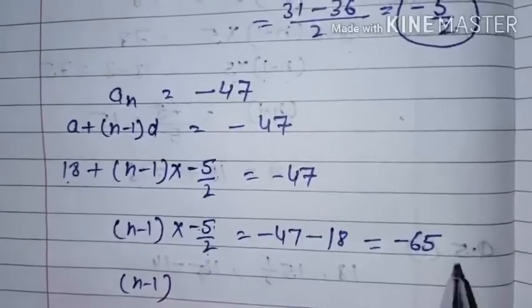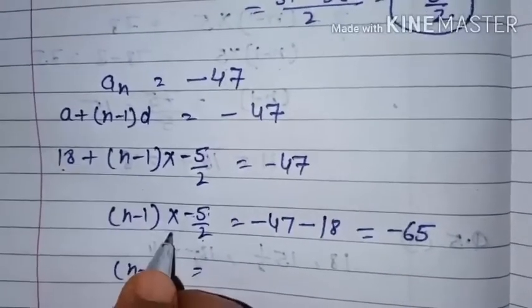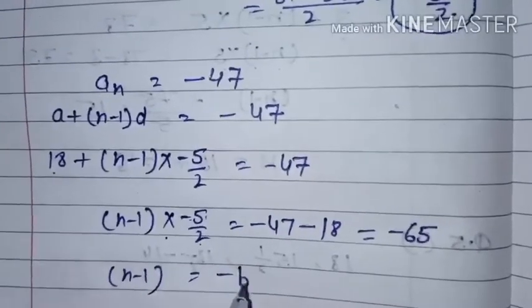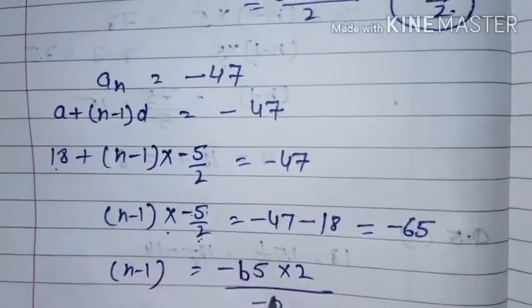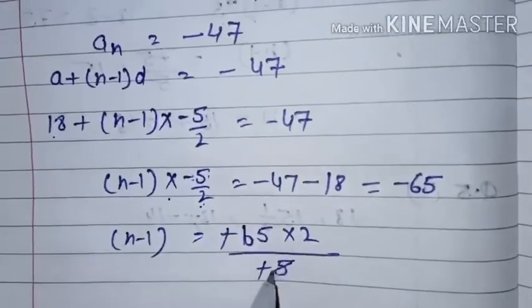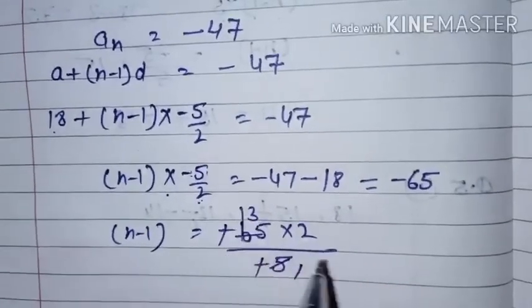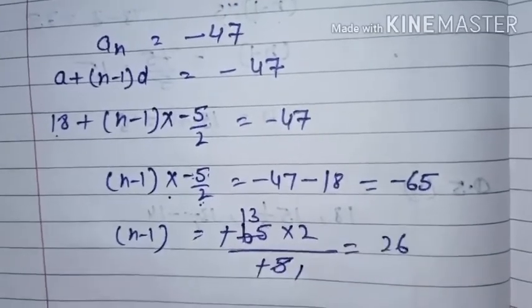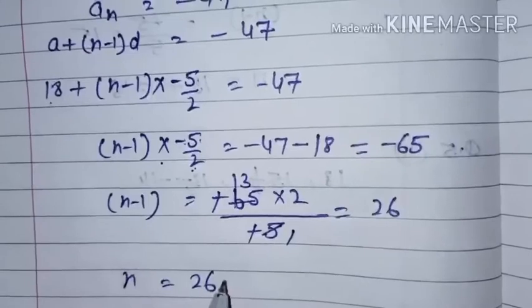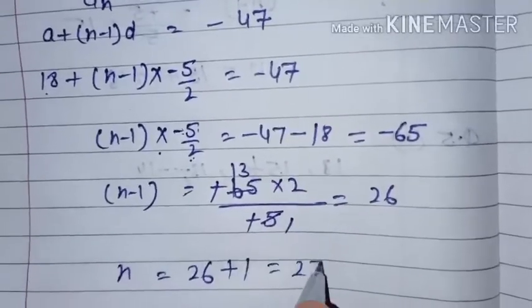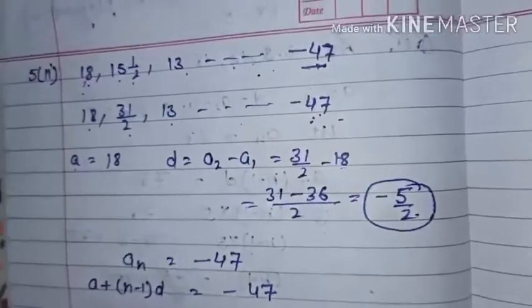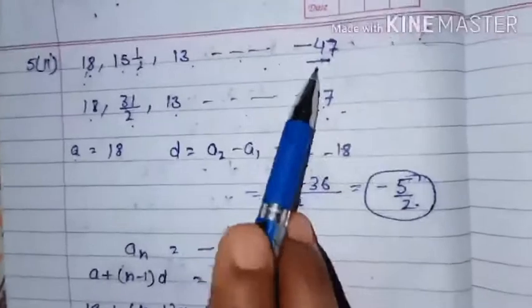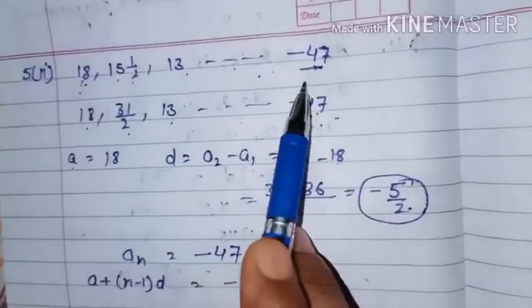Taking minus 5 by 2 to the right hand side, it goes into division. So N minus 1 equals minus 65 divided by minus 5 by 2. The minus signs cancel, and solving gives 26. Therefore N equals 26 plus 1 equals 27. It means in this AP, from 18 to minus 47, there are 27 terms, or minus 47 is the 27th term of this AP.